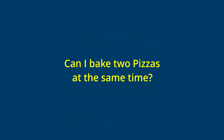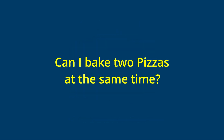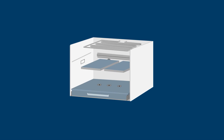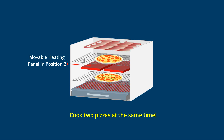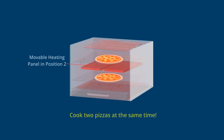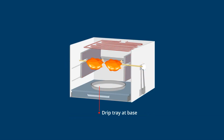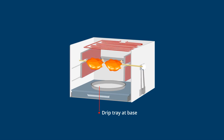Reposition the movable heating panel to position 2 and convert the oven into a double oven and save on time. And you can also use the horizontal rotisserie for heavy duty roasting too.